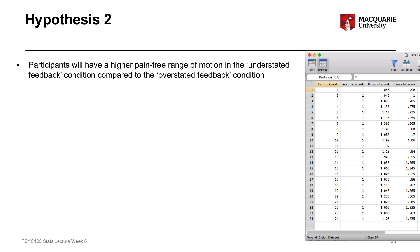The hypothesis here for number two is that participants will have a higher pain-free range of motion in the understated feedback condition compared to the overstated feedback condition. In the condition where the range of motion participants see on their virtual reality headset is lower than their actual range of motion, we think they'll move more freely compared to the condition where the displayed range of motion is greater than what they're actually doing.